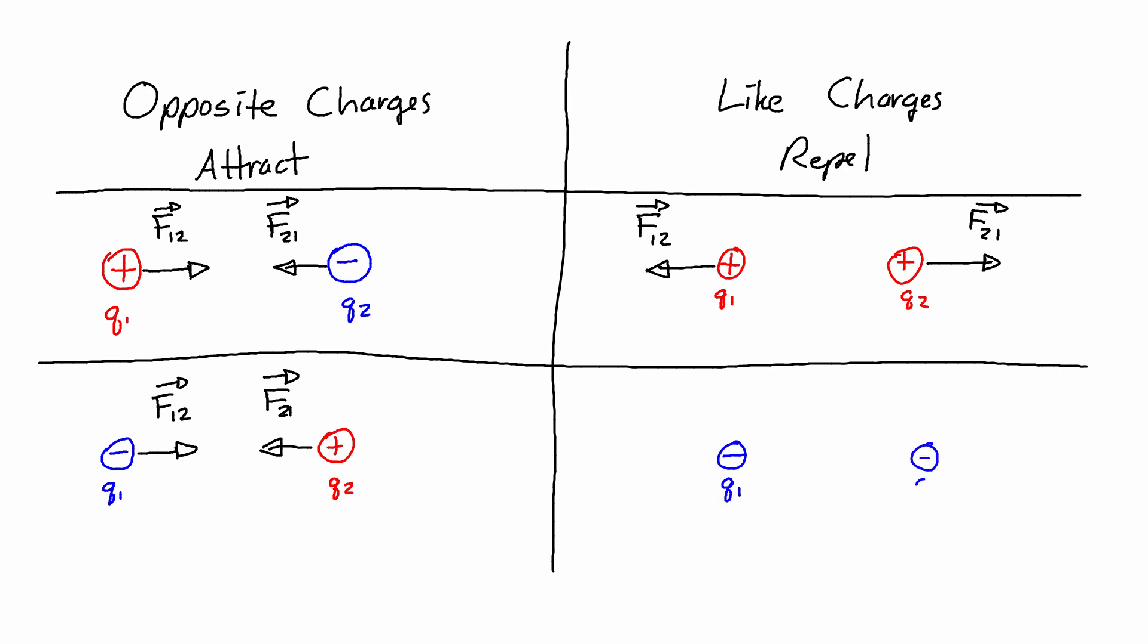...if I have two negative charges, Q1 and Q2, then Q1 is going to push Q2 away, so the F on 2 by 1 is to the right, and Q2 is going to push Q1 away, F on 1 by 2.